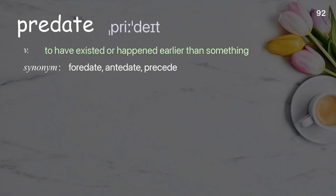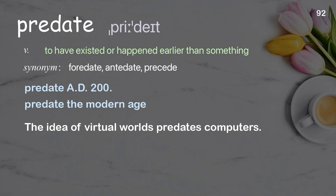Predate: To have existed or happened earlier than something. Examples: predate AD 200, predate the modern age. The idea of virtual worlds predates computers.